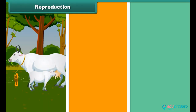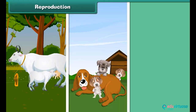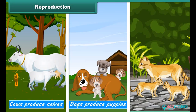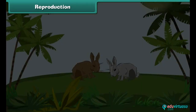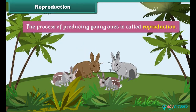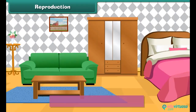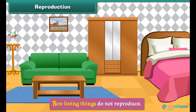Reproduction. All living things produce young ones like them. For example, cows produce calves, dogs produce puppies, and cats produce kittens. The process of producing young ones is called reproduction. Non-living things do not reproduce.